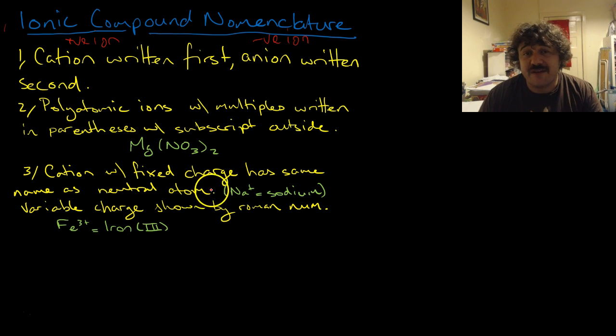The cation with a fixed charge, so this is a metal which is not a transition metal, has the same name as the neutral atom. A cation with a fixed charge has the same name as the neutral atom. For example, Na plus is sodium.